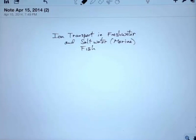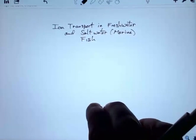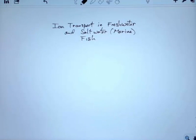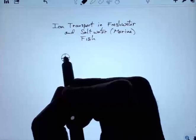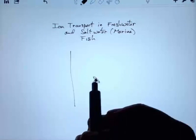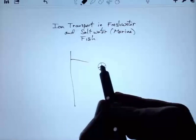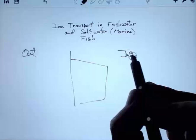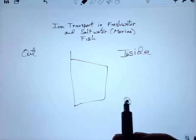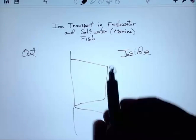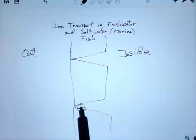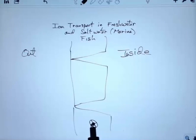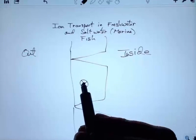This segment is about ion transporters in freshwater and saltwater marine fish. I'm going to start with a line to illustrate the inside versus the outside. Here's an epithelial cell, outside to the left, inside to the right. I'm going to start with freshwater. I'm exaggerating the spaces between these cells because I want to use them to show you what's going on a little bit later.